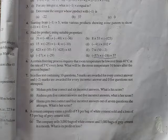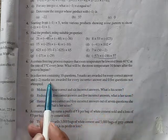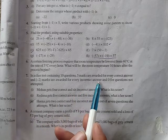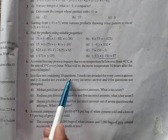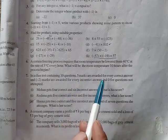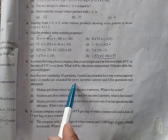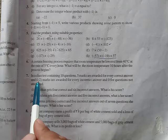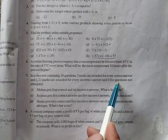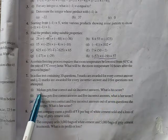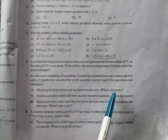Next question. In a class test containing ten questions, five marks are awarded for every correct answer, and minus two marks are awarded for every incorrect answer, and zero for questions not attempted. Number one is Mohan. Mohan gets four correct answers and six incorrect answers. What is his score?